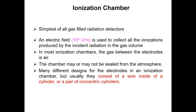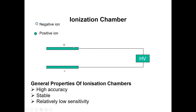There are many different designs for the electrodes of an ionization chamber, but they usually consist of a wire inside a cylinder, or a pair of concentric cylinders. The ionization chamber comes in a variety of shapes and structures. Most commonly it consists of a cylindrical shape with two electrodes — the anode and the cathode — which have their respective functions.